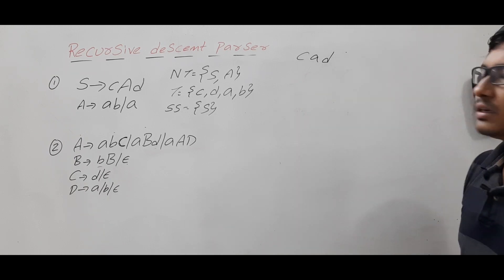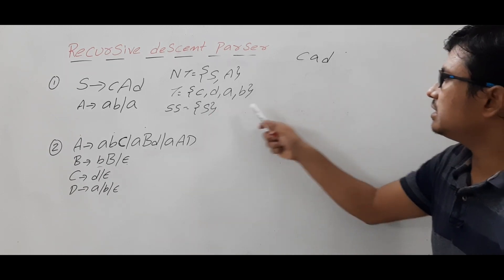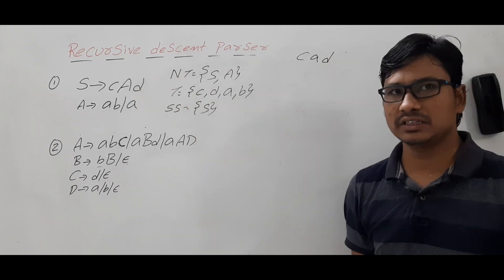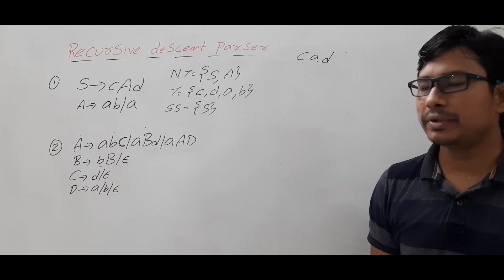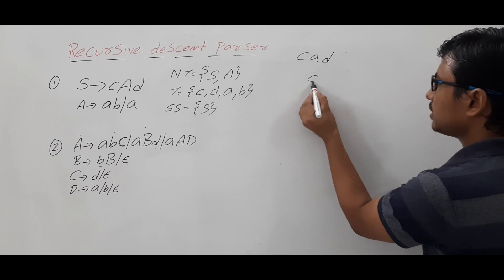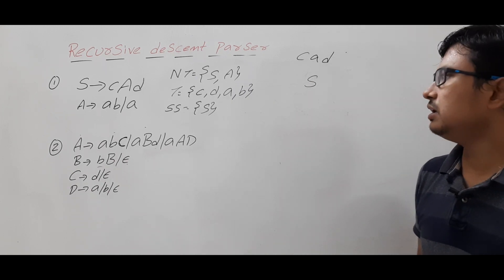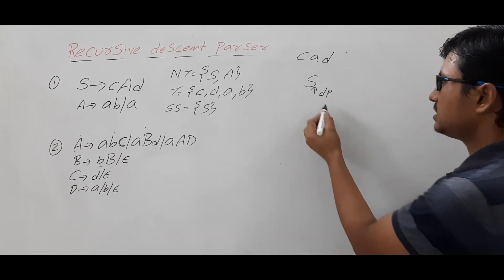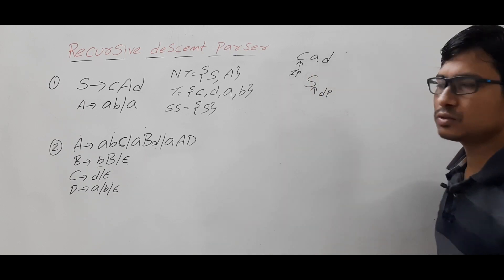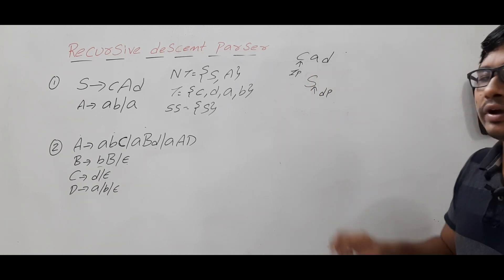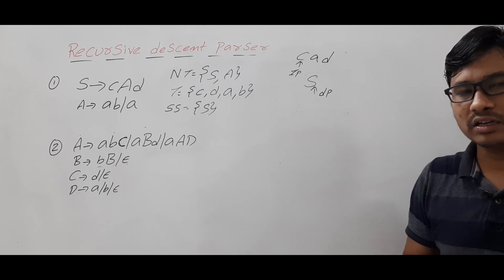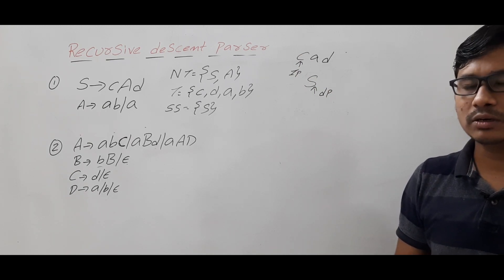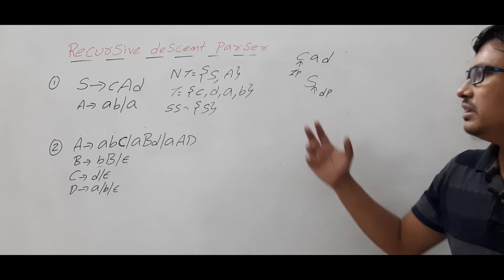We want to generate the string 'cad'. C is a terminal, a is a terminal, d is a terminal, so this string may be generated from this grammar. The recursive descent parser starts from the start symbol. It consists of two pointers: a descent pointer and an input pointer. It checks whether the descent pointer is pointing to a terminal or not. If it is a terminal, it checks whether it equals the input pointer.